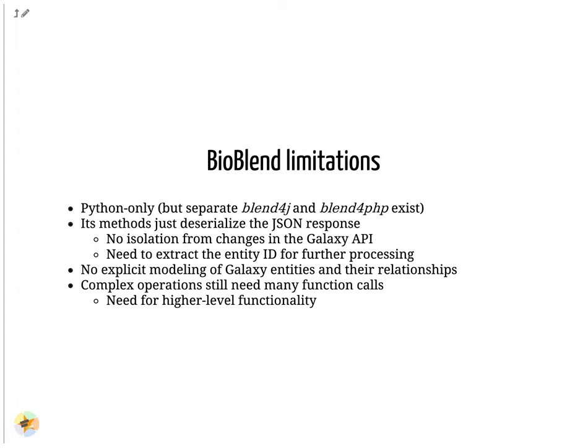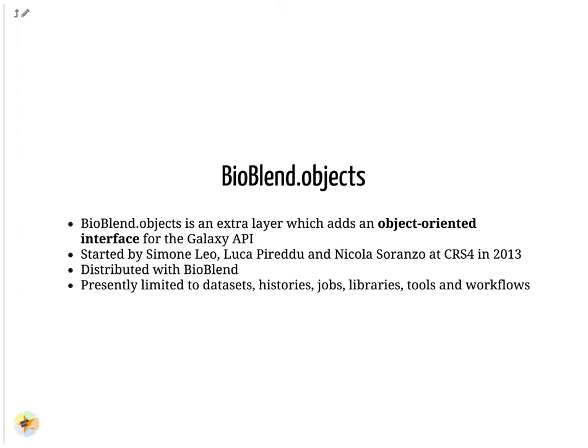To implement the modeling of Galaxy entities, some years ago an object-oriented interface was added on top of BioBlend: BioBlend_objects. It is developed and distributed together with BioBlend itself. When using this interface, method calls will return objects encapsulating the dictionaries returned by the Galaxy API. The user can then invoke further methods on these objects, for example the download method for a dataset object. Only a subset of BioBlend is available through the object interface, but most of the common user functionalities are included.